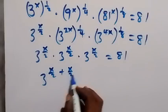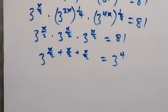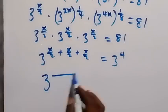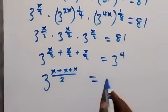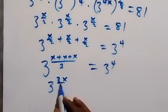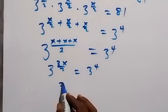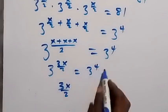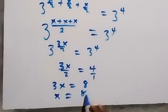Bringing them together with the same base, we add the powers: 3 raised to power x over 2 plus x over 2 plus x over 2, equals 3 raised to power 4. Adding the exponents: x plus x plus x is 3x, so we have 3 raised to power 3x over 2 equals 3 raised to power 4. Equating the powers: 3x over 2 equals 4. Cross multiplying: 3x equals 8, so x equals 8 over 3.